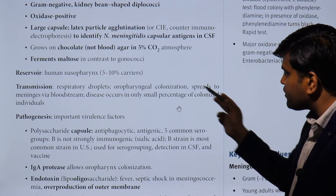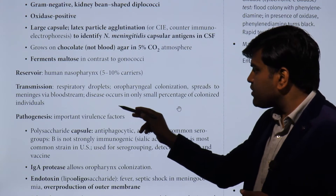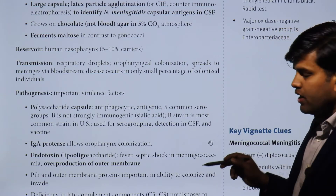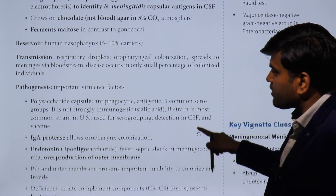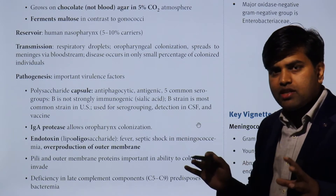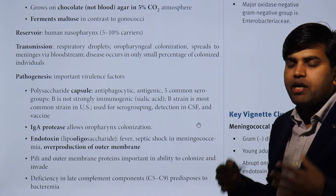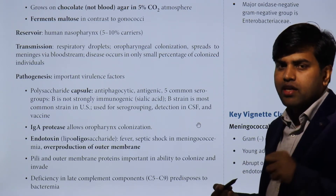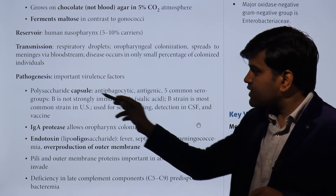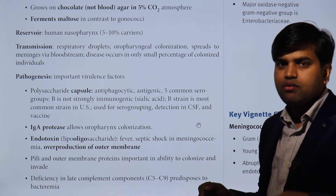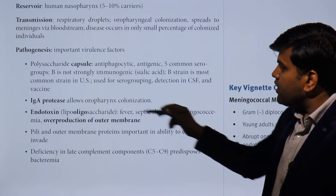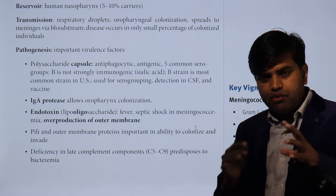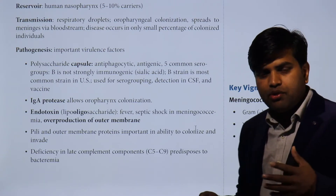Transmission occurs via respiratory droplets, leading to oropharyngeal colonization and spread to meningitis via the bloodstream. Disease occurs only in a small percentage of colonized individuals. Regarding pathogenesis and virulence factors: the polysaccharide capsule inhibits phagocytosis — bacteria with a capsule can evade our immune cells' killing mechanism. This polysaccharide capsule prevents phagocytosis, allowing the bacteria to survive inside the body.